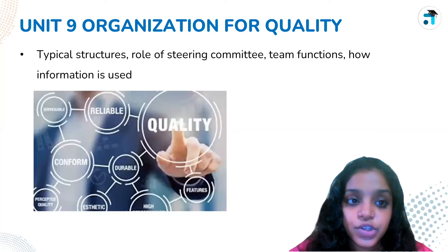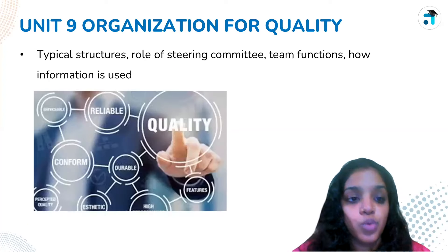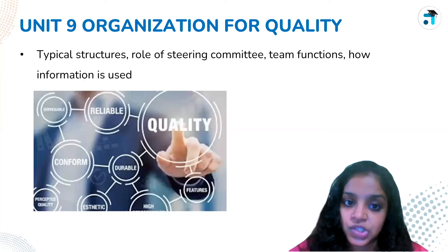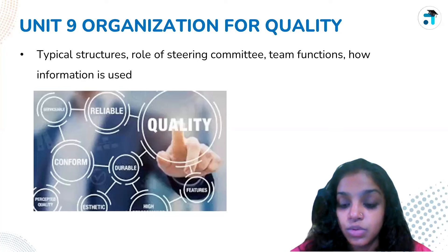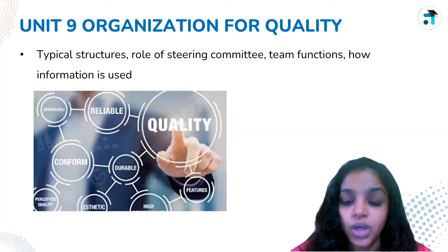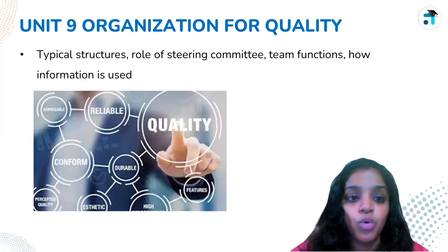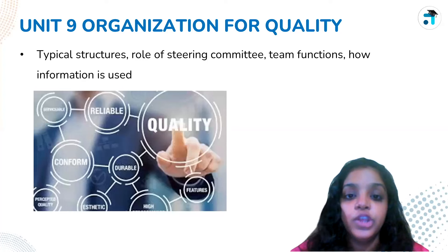Unit 9 is Organization for Quality. This covers the typical organizational structure, the steering committee, the role of the steering committee, the role of the team, and the role of information that we use.